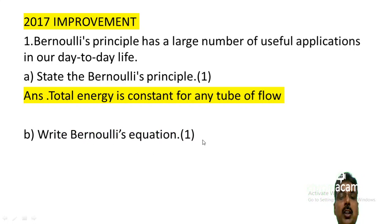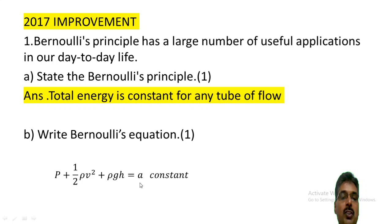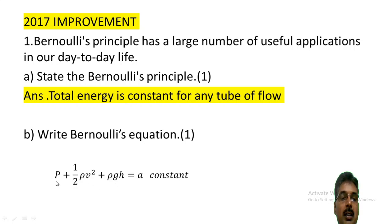Bernoulli's equation states: P plus rho V squared plus rho GH is constant, where P is pressure, rho is density, V is velocity, G is acceleration due to gravity, and H is height. The full form is: P1 plus rho V1 squared plus rho GH1 equals P2 plus rho V2 squared plus rho GH2.